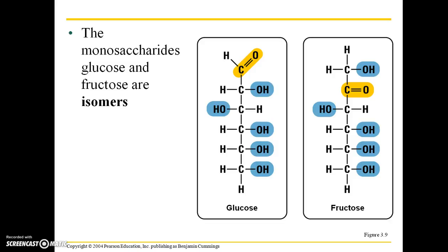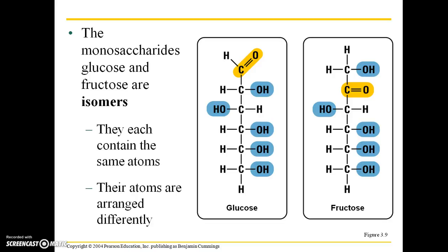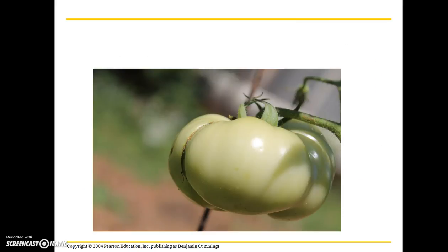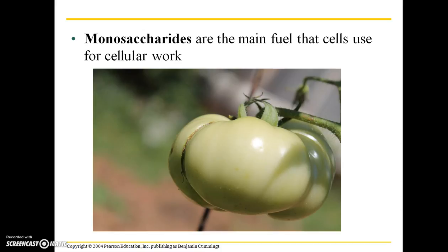The monosaccharides glucose and fructose are what are known as isomers. This means they each contain the same atoms, but their atoms are arranged differently. You can see glucose and fructose are very similar — they have the same building blocks, but the structural arrangement differs. Monosaccharides are the main fuel that cells use for cellular work. Whenever your cell needs to repair itself or bring in large molecules, it needs energy to do those things, and it will use monosaccharides to accomplish that.